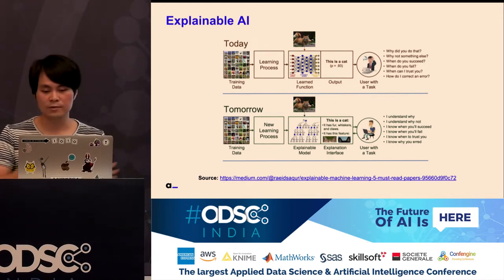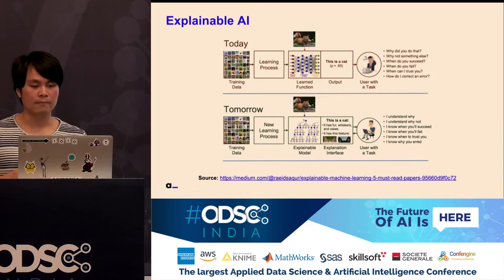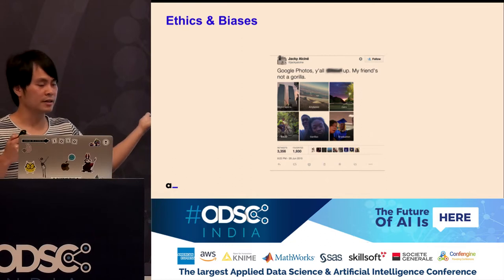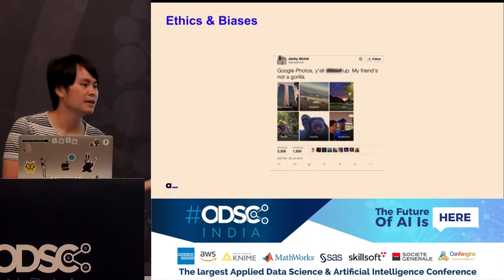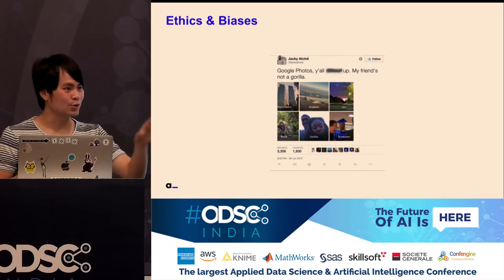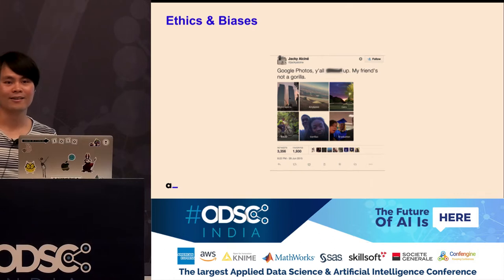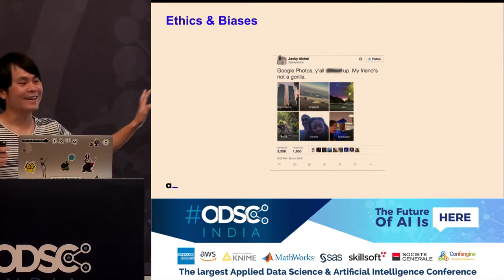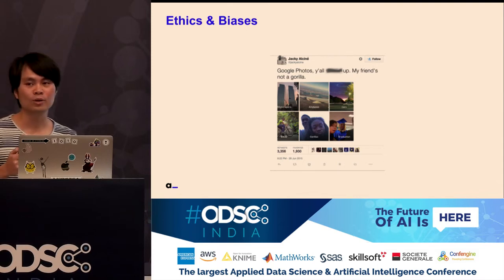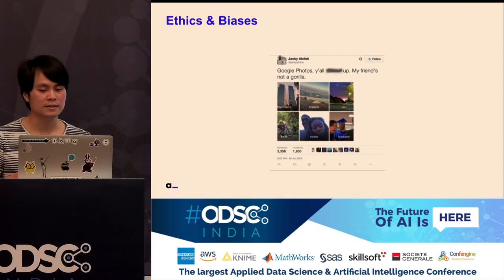When Google trained the model, they didn't have enough data of Black people, Asians, or other groups — a lot of the data was biased toward white people. That means you need to understand what your model is actually selecting. Another important factor is GDPR. In Europe, someone can demand from a company — especially when you have machine learning in production — why a decision was made. You have to give them the reason, or they can fine you a lot of money.